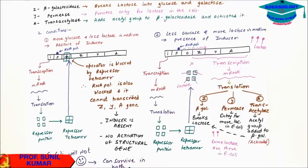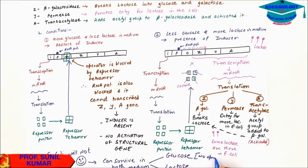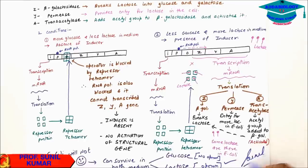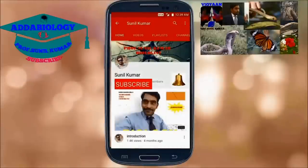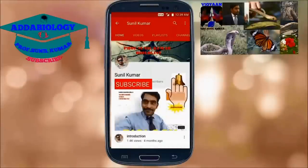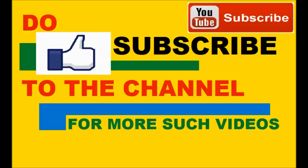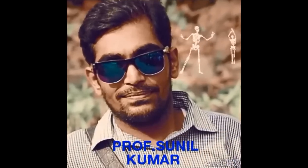So this is how the activation of the lac operon takes place. E. coli will never die because it can survive in both media — in the presence of glucose as well as lactose. The only difference is that with glucose, the operon does not need to work, but with lactose, the operon is required.